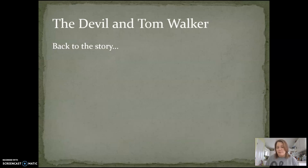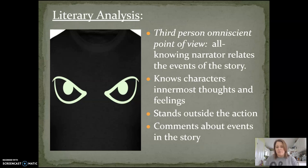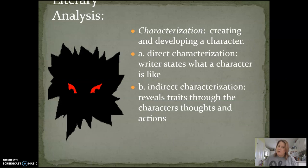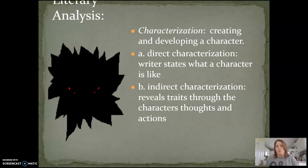Swinging back to The Devil and Tom Walker — when you read this story, there are a couple of things you should keep in mind in addition to the Faust legend. The first is that this is told in a third-person omniscient point of view. The narrator is all-knowing, so he is able to relate all of the events of the story and know the characters' innermost thoughts and feelings — not just one character. We get a lot of different perspectives from the narrator who stands outside the action and comments about events in the story. You should also pay attention to the characters of Tom Walker and his wife, and how the author creates and develops them. Direct characterization is when traits are directly stated; indirect characterization is when traits are revealed through the character's thoughts and actions.